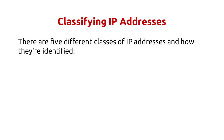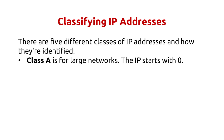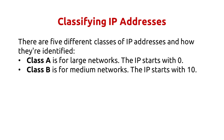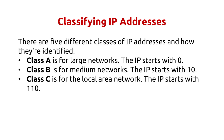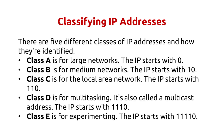There are five different classes of IP addresses. Class A is for large networks — the IP starts with zero. Class B is for medium networks — the IP starts with one zero. Class C is for the local area network — the IP starts with one one zero. Class D is for multicasting, also called a multicast address — the IP starts with one one one zero. Class E is for experimenting — the IP starts with one one one one zero.